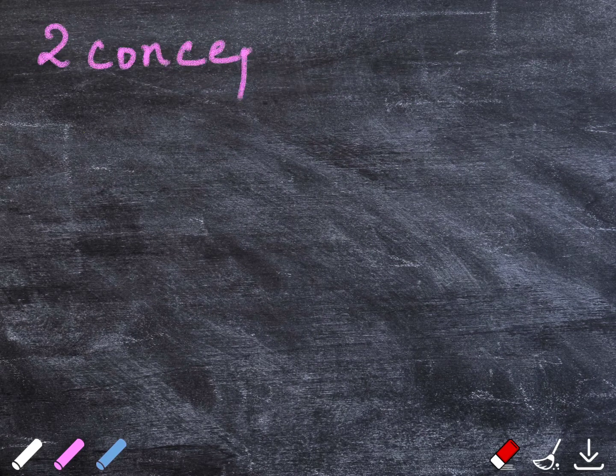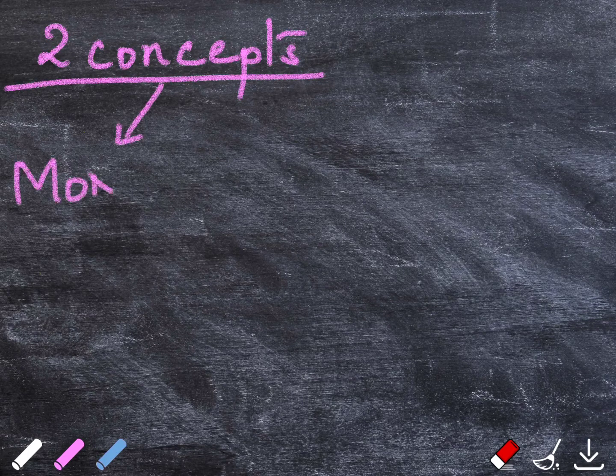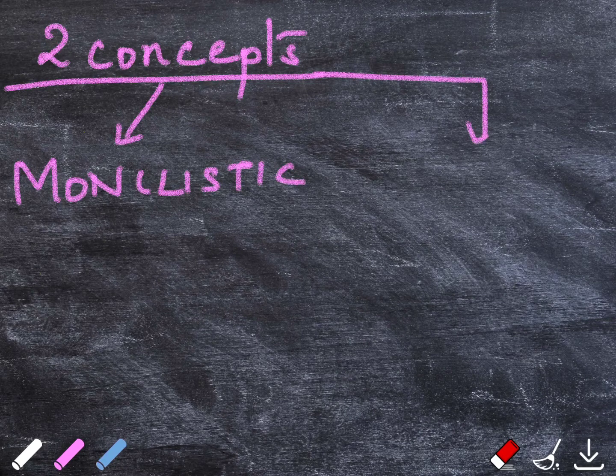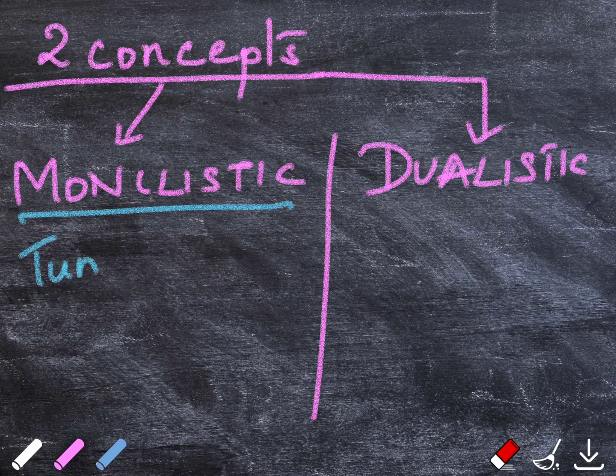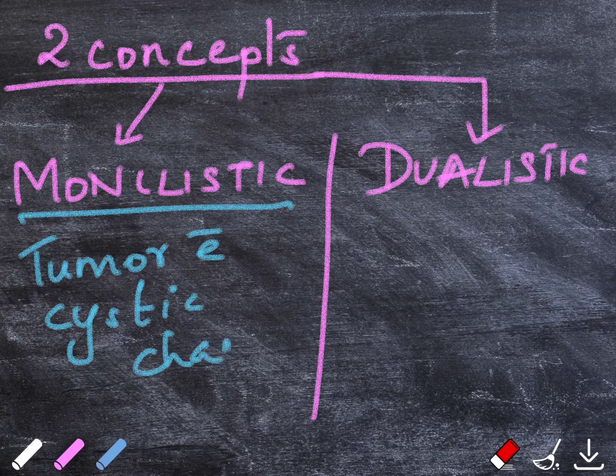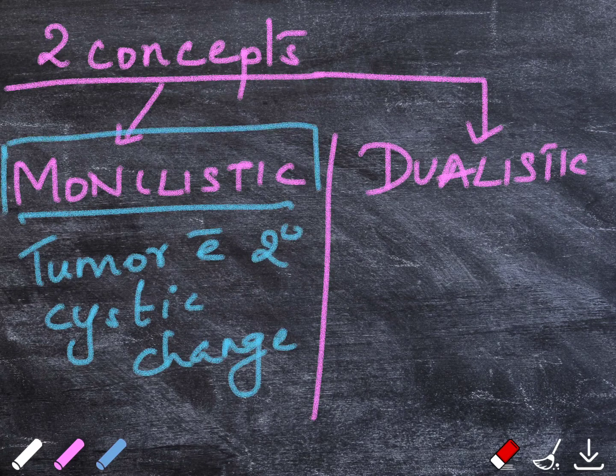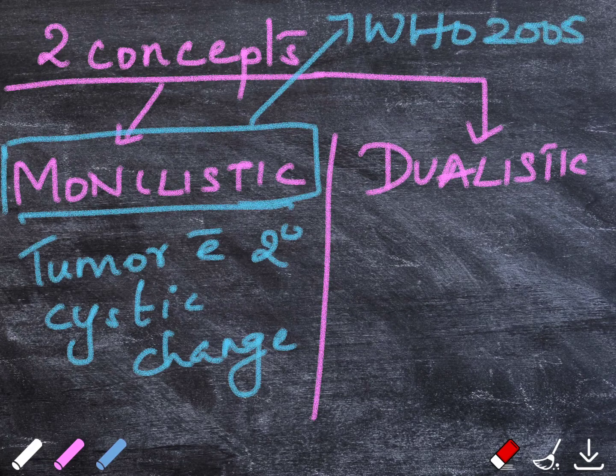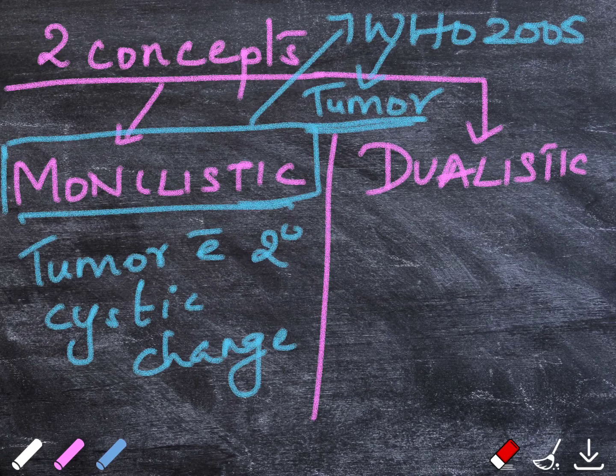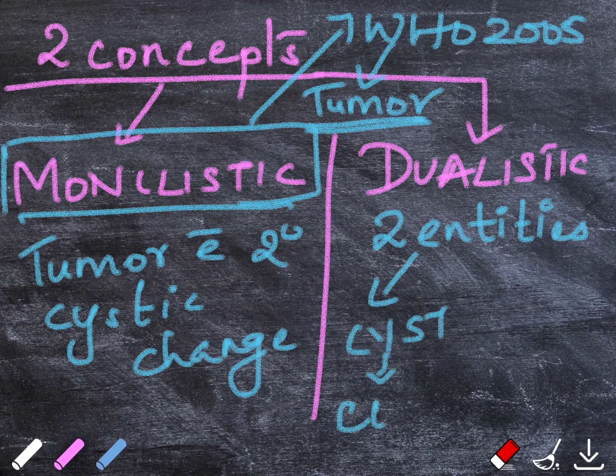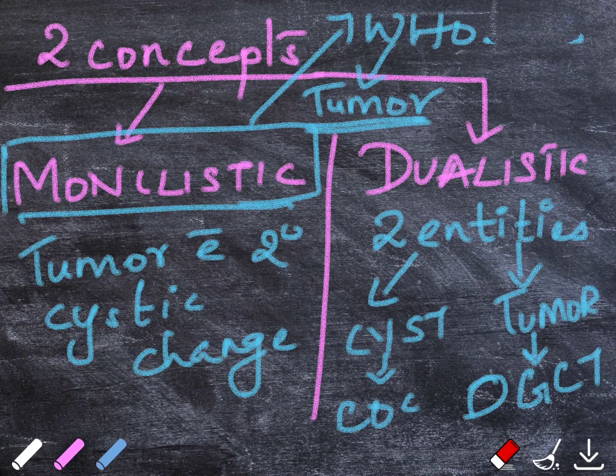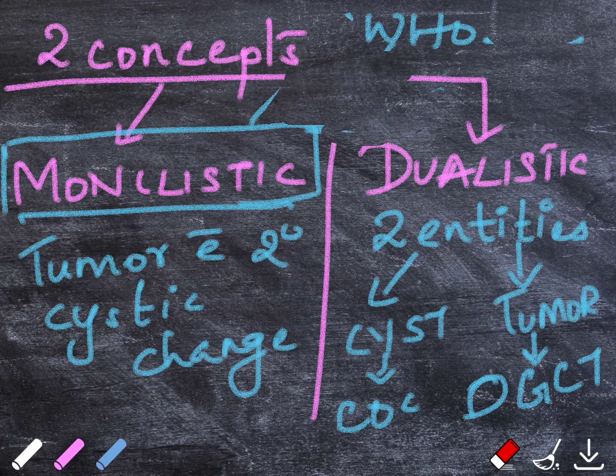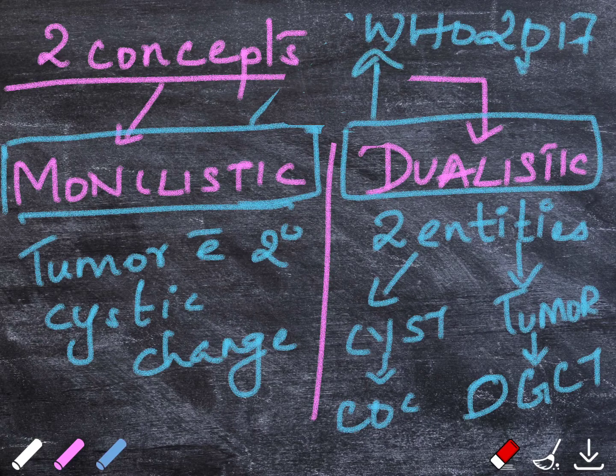There were two concepts which played an important role in these decisions. The first one is the monolistic concept and the second one is the dualistic concept. From long term, there is controversy whether it's a cyst or a tumor. In the monolistic concept, they considered it to be a tumor which shows secondary cystic changes. This supported its classification as a tumor in 2005. Whereas in 2017, authors started accepting the dualistic concept wherein two entities are present: a cyst that is COC or a tumor which is put as dentinogenic ghost cell tumor. This supported the reclassification as a cyst in 2017.